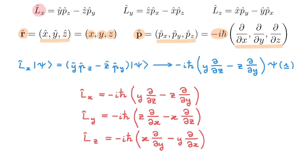And that's it — these are the angular momentum operators in the position representation, with a small caveat. A lot of the time, it is actually more convenient to work in spherical coordinates rather than Cartesian coordinates. So what I want to do in the rest of the video is to rewrite these expressions for Lx, Ly, and Lz in spherical coordinates — a process that is utterly tedious, but really necessary. It's almost like a rite of passage: all of us have to do it once in our lives, just so we never have to do it again.